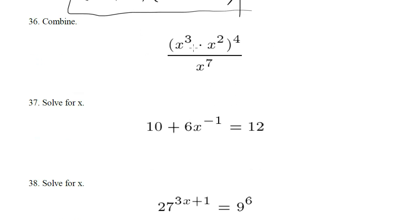Combine. Well, let's combine these two first by our exponent rules. So x to the 3 times x to the 2, which are exponent rules, is going to become x to the 5 to the 4 over x to the 7. This is going to become x to the 20 over x to the 7. Now we subtract the exponents and we're left with our final answer of x to the 11.